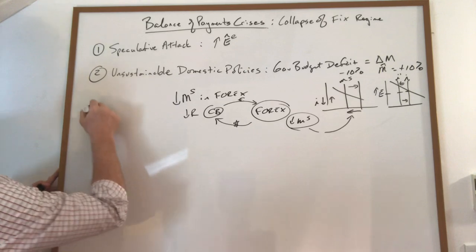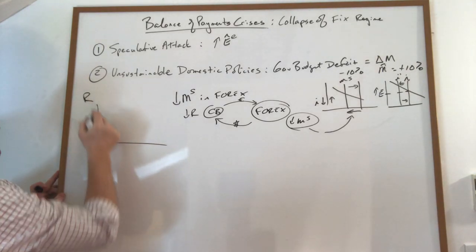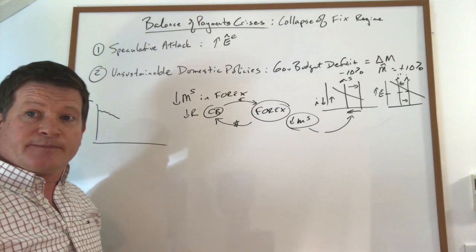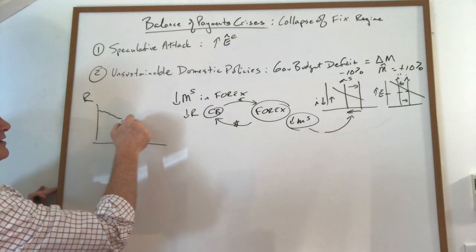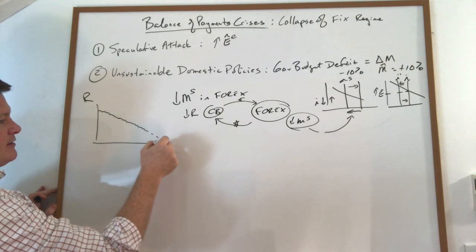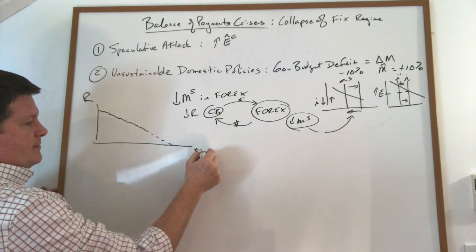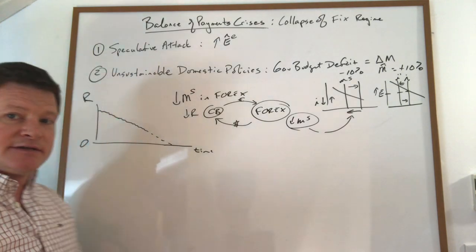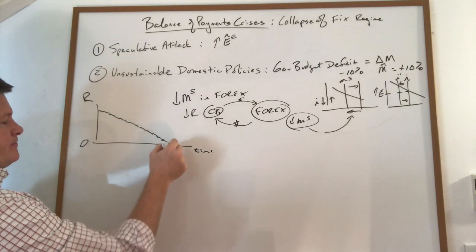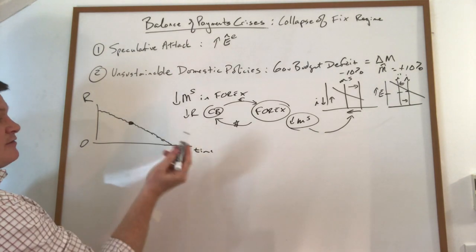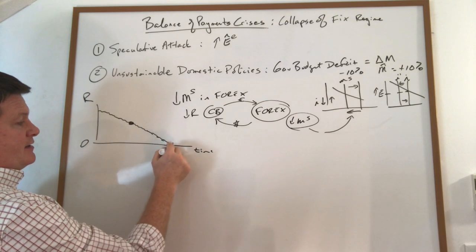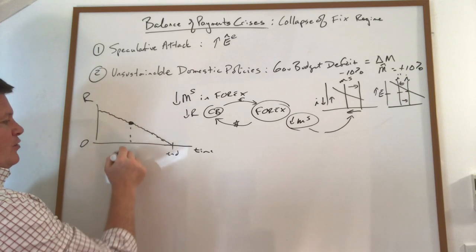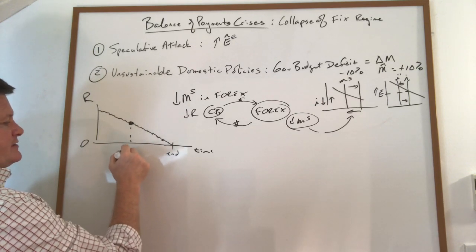Suppose this is going on at 10% a year. Then you'll see the reserves of this country declining at about 10% a year. Pretty much everybody can see that it's going to decline over time and eventually hit zero. So what happens is somewhere midstream — when everybody can see when the end should be — we get the speculative attack.